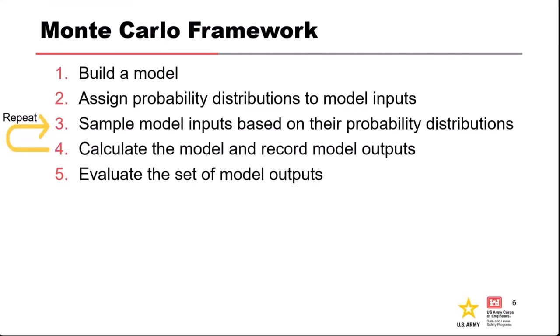Once you've done that, you take the collection of all those recorded model outputs and evaluate them. For example, if you ran the model a thousand times and the factor of safety was less than one a hundred times, you'd say that's 100 out of 1,000 — a ten percent probability that your factor of safety is below the limit state of one. This works with all kinds of different models. If you can build a model, you can put a Monte Carlo framework on top of it.